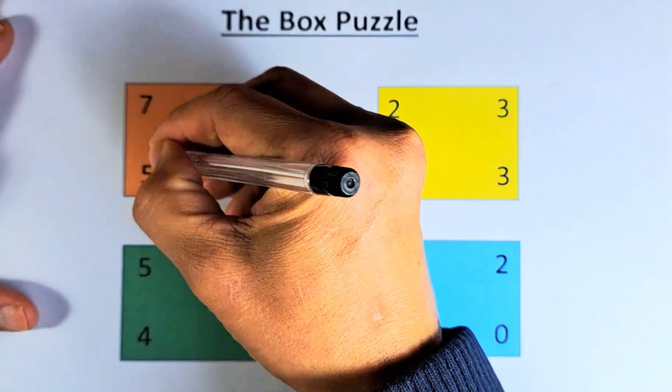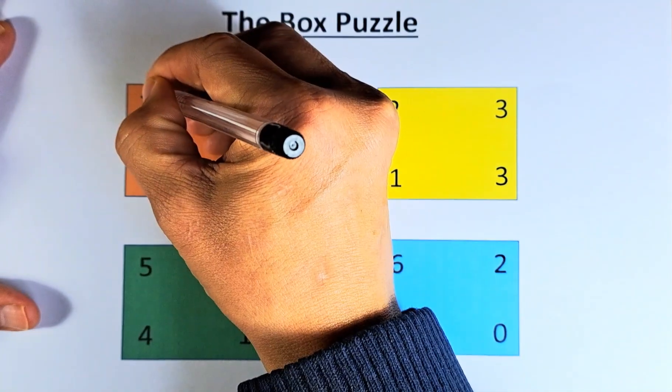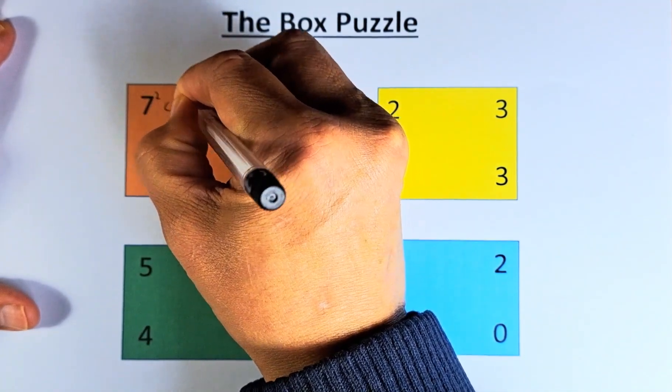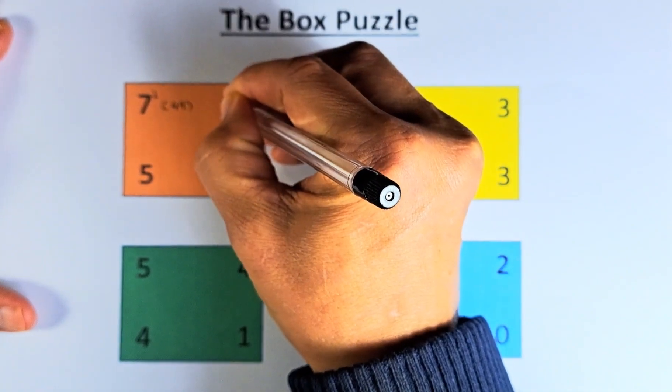So to get 50, 7 squared is 49, and 1 squared equals 1.